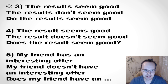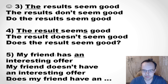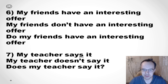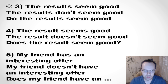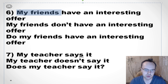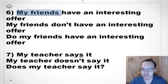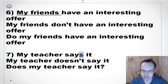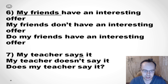'My friend has an interesting offer. My friend doesn't have an interesting offer. Does my friend have an interesting offer?' — my friend is he or she, that's why we use 'has.' 'My friends have an interesting offer' — my friends means they, so no S. 'My friends don't have an interesting offer. Do my friends have an interesting offer?' 'My teacher says it' — he or she, so we add S. 'My teacher doesn't say it. Does my teacher say it?'